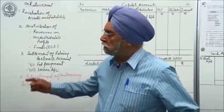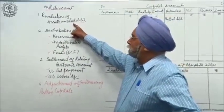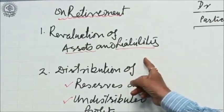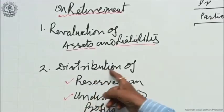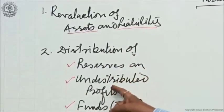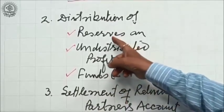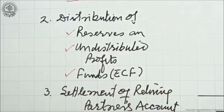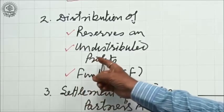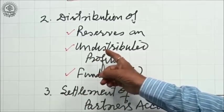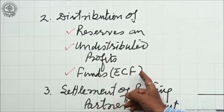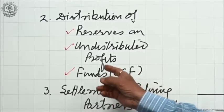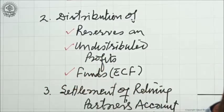The second thing which is to be done is revaluation of assets and liabilities, in the same way as it was in the case of admission. Next is distribution of reserves, undistributed profits, or any funds. If there are reserves lying there, these reserves were built when the retiring partner was a regular active partner. So if he is going, he must get his share of these profits. Some undistributed profits, some funds like an employees' compensation fund — if there is no claim on this fund, the entire fund will be distributed among the old partners in the old ratio.